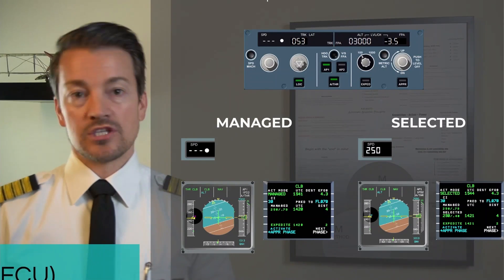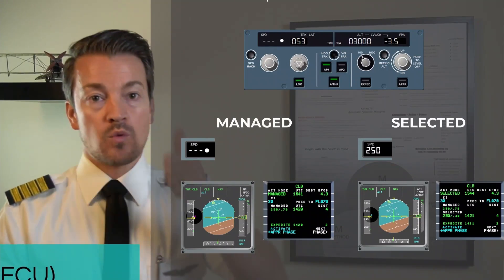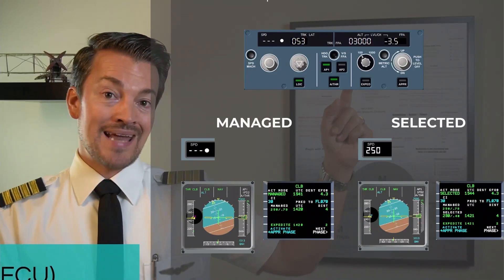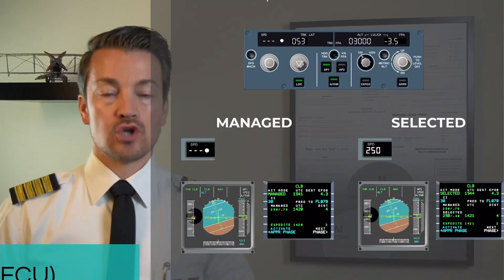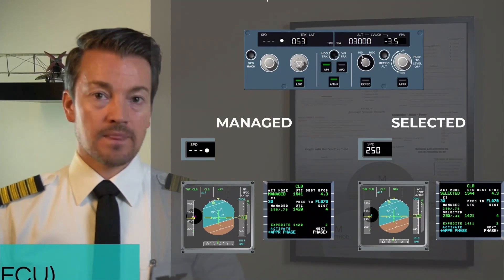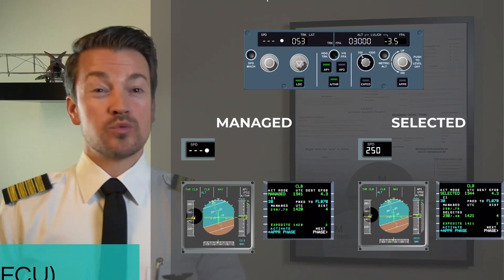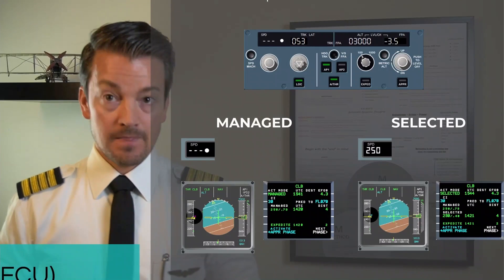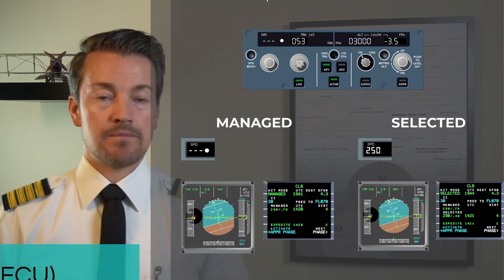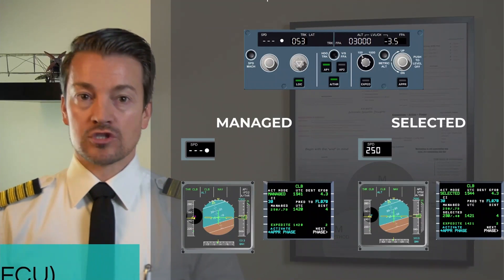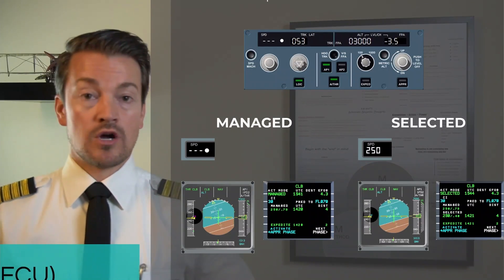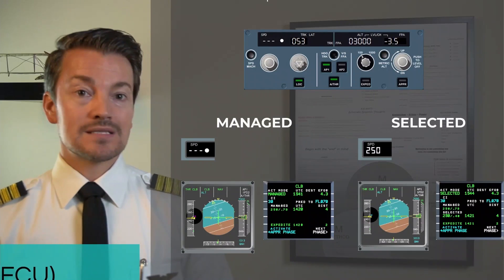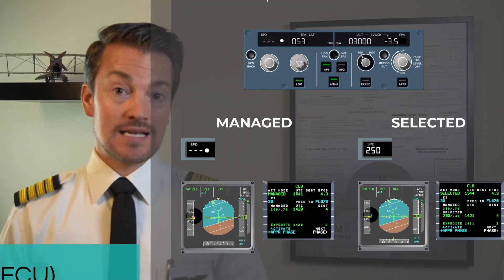We always have to be aware of whether we want managed or selected mode depending on the situation. Unlike the speed and heading windows which go blank with dashes and a dot in managed mode, the altitude window always shows the value even in managed climb. The last knob is the vertical speed knob, which allows us to set a vertical speed of plus or minus 100, 200, up to 1500 feet per minute climb or descent. The vertical speed knob does not have a managed mode — it is always selected mode regardless.